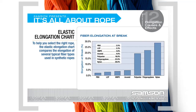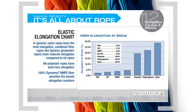Samson provides information to help you select the right rope for your application. The elongation chart compares the elongation of several typical fiber types used in synthetic ropes. In general, nylon ropes have the greatest amount of elongation. Ropes that combine two fibers, like Nystron — a combination of polyester and nylon fibers — have reduced elongation compared to all-nylon ropes. All-polyester ropes, like Stable Braid, have even less elongation. Amsteel Blue, a rope made from 100% Dyneema HMPE fiber, has ultra-high strength and exhibits even lower elongation.